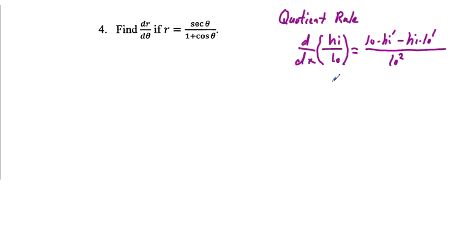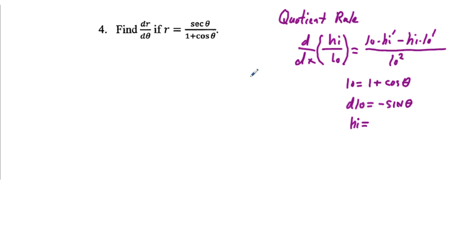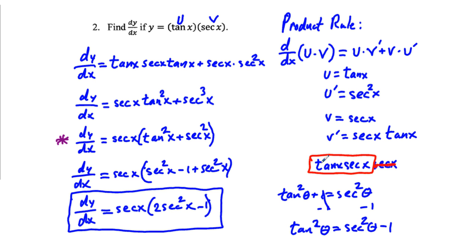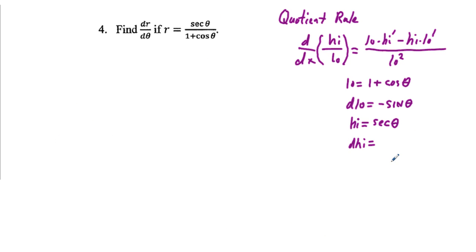Let's identify the components. The low is 1 plus cosine θ (the denominator), and d-low equals negative sine θ. The high is secant θ, and d-high equals tangent θ secant θ — the derivative of secant we worked out in problem 2.